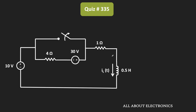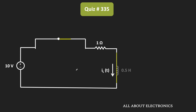We have been given that since a long time, this switch is in the closed condition. When this switch is in the closed condition, the second branch will also act as a short circuit. And before the time t equals zero, since the circuit has been in this condition for a long time, we can say that the circuit is already in the steady state condition. In the steady state condition, this inductor will act as a short circuit. In this condition, this inductor current is equal to 10V divided by 1 Ohm, that is equal to 10A.